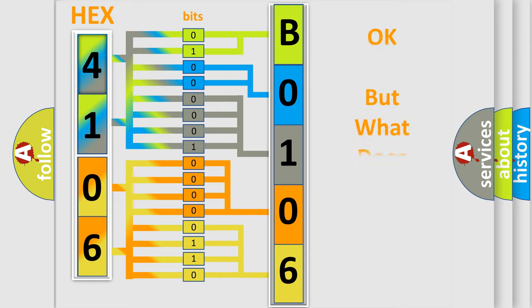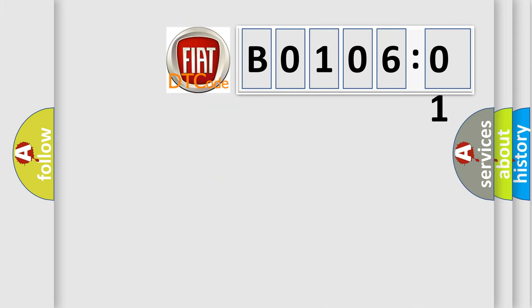We now know in what way the diagnostic tool translates the received information into a more comprehensible format. The number itself does not make sense to us if we cannot assign information about what it actually expresses. So, what does the Diagnostic Trouble Code B010601 interpret specifically for Fiat car manufacturers?